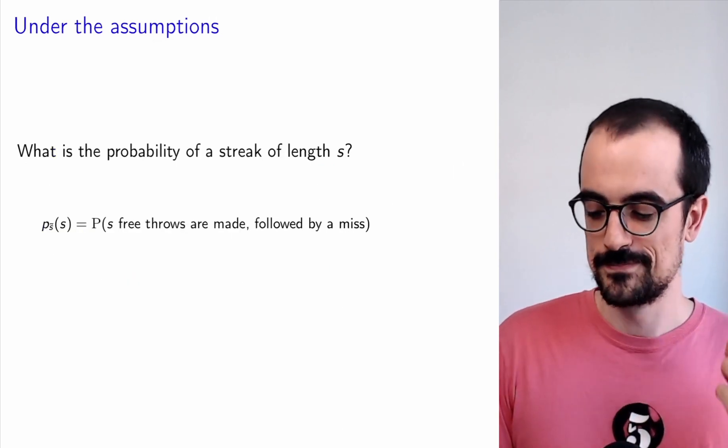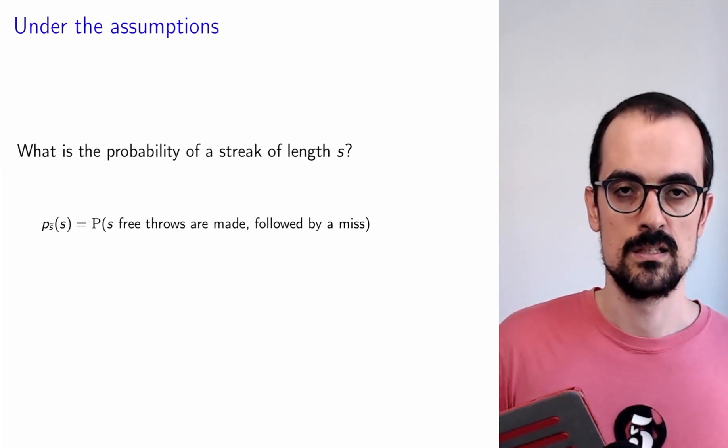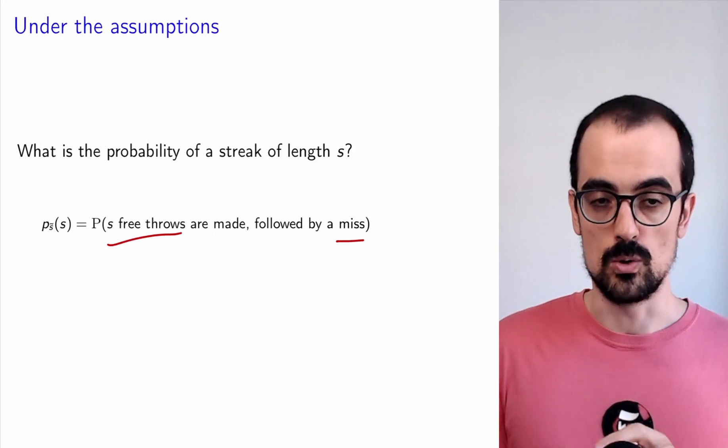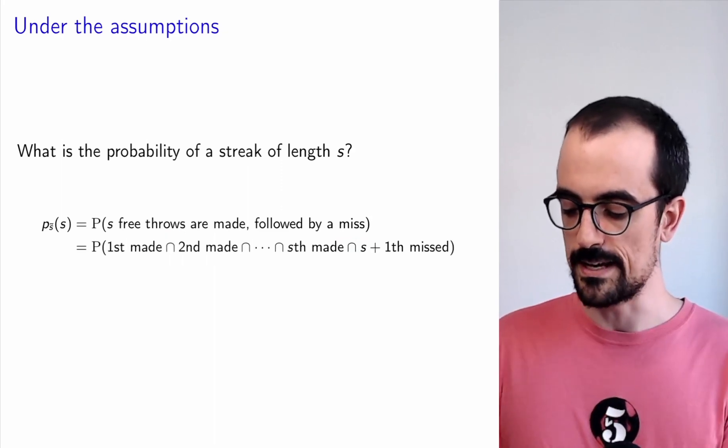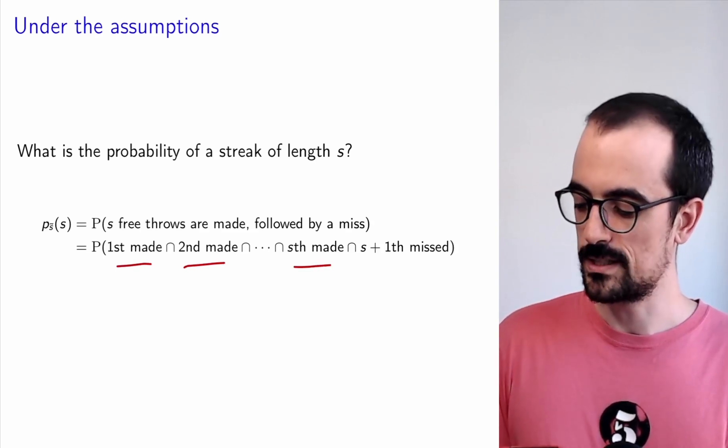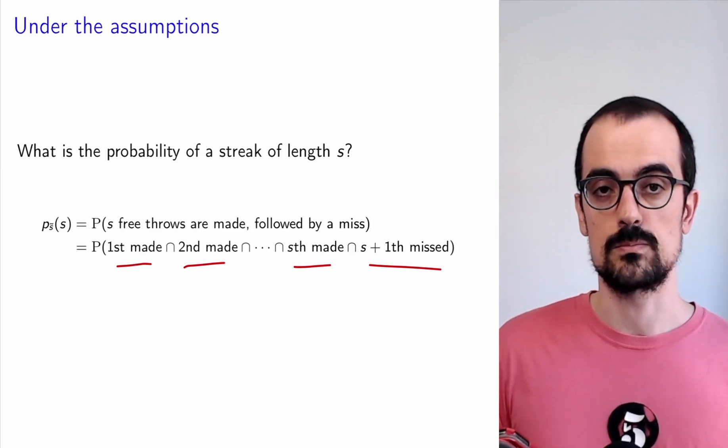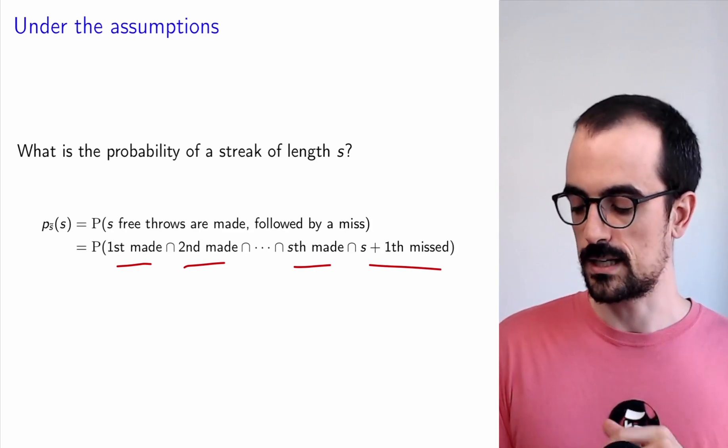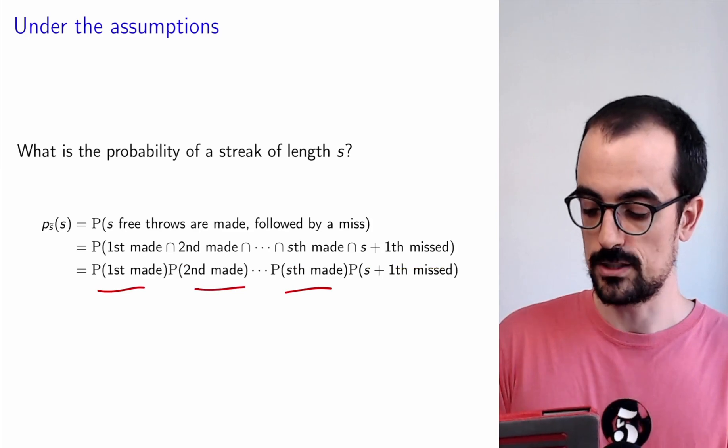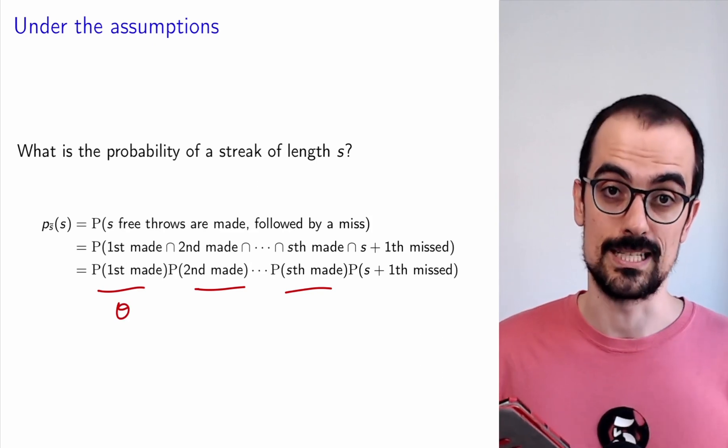Under these assumptions, what is the probability of observing a streak of length s? Well, he makes s free throws and then he misses. This probability is the probability of the event: make the first one, make the second one, up to make the s-th one, and then the next one is missed. Under our assumptions these events are mutually independent, so we can express the probability of this intersection as the product of the individual probabilities. How many made free throws do we have? s. Each of these is going to be equal to theta by our first assumption.